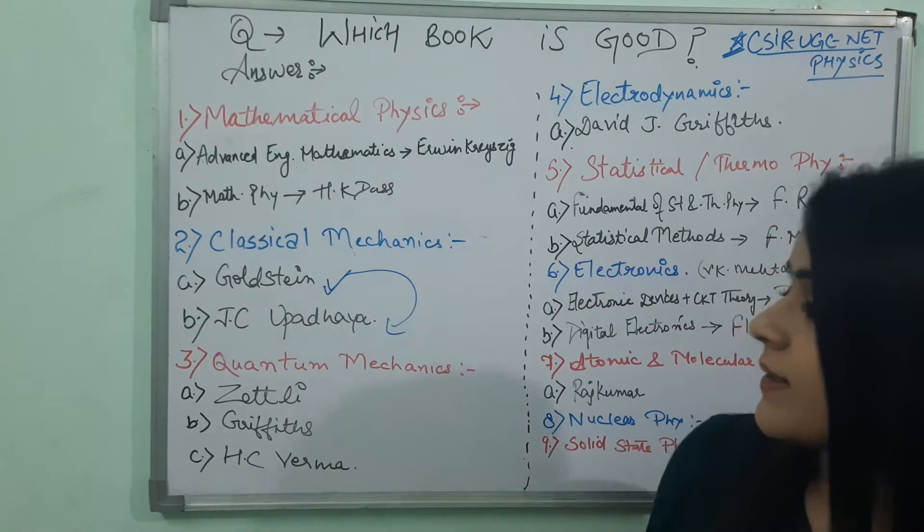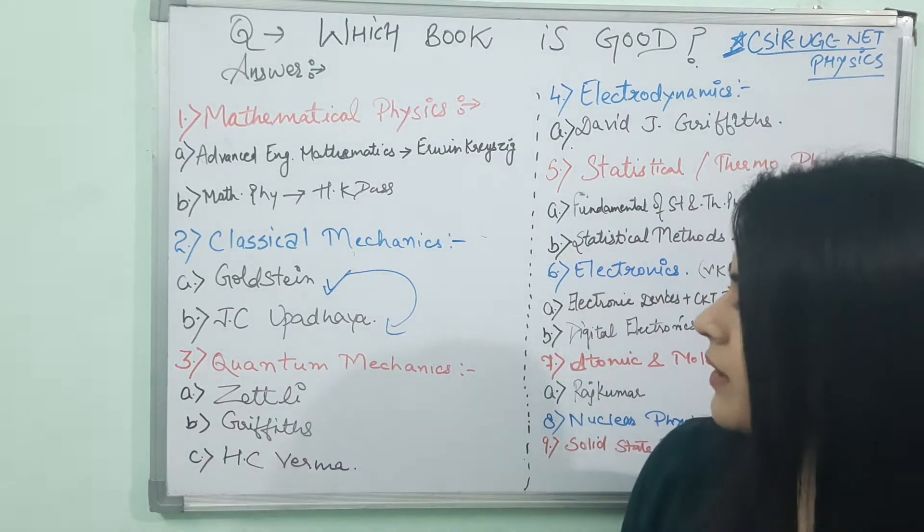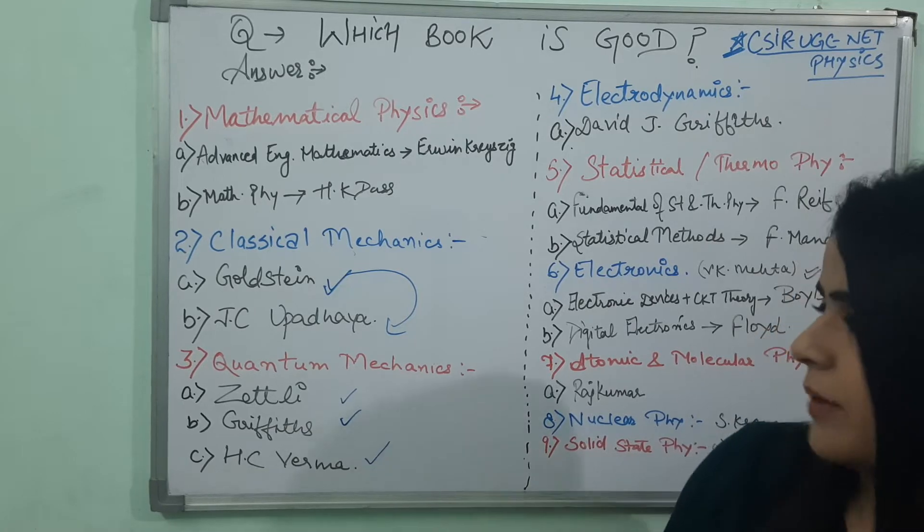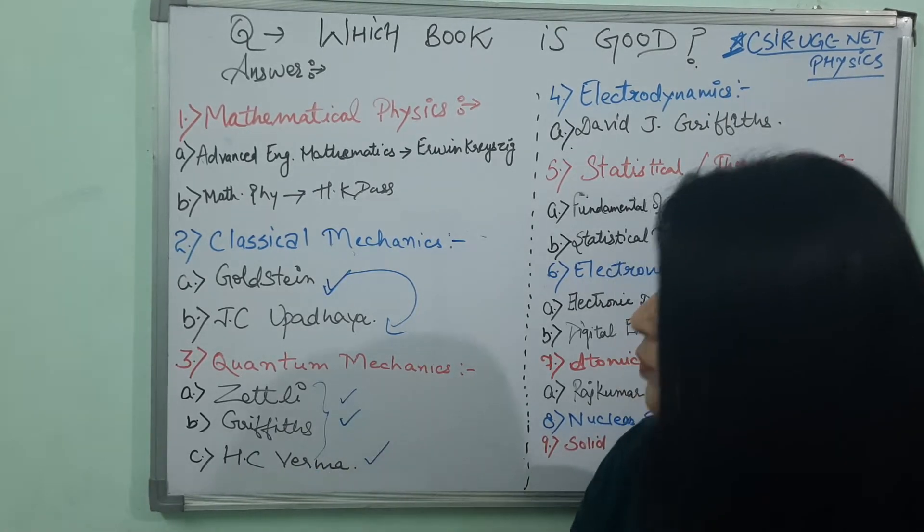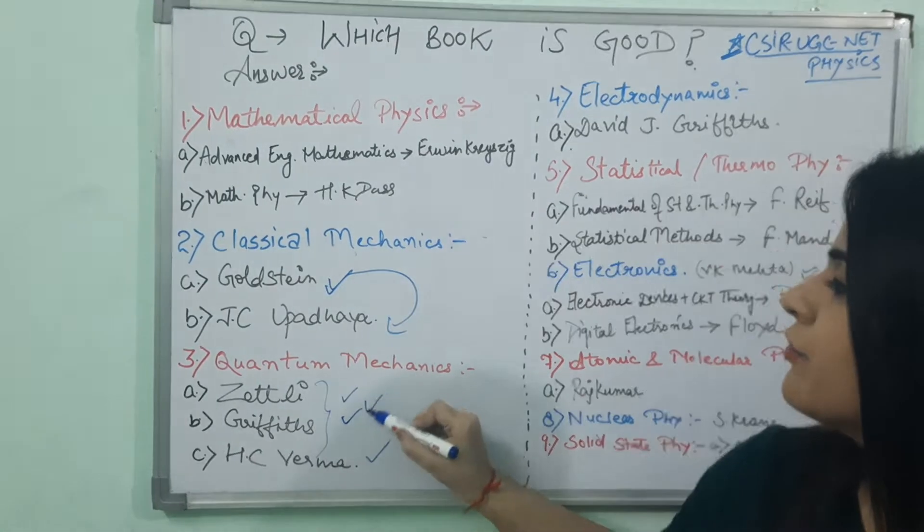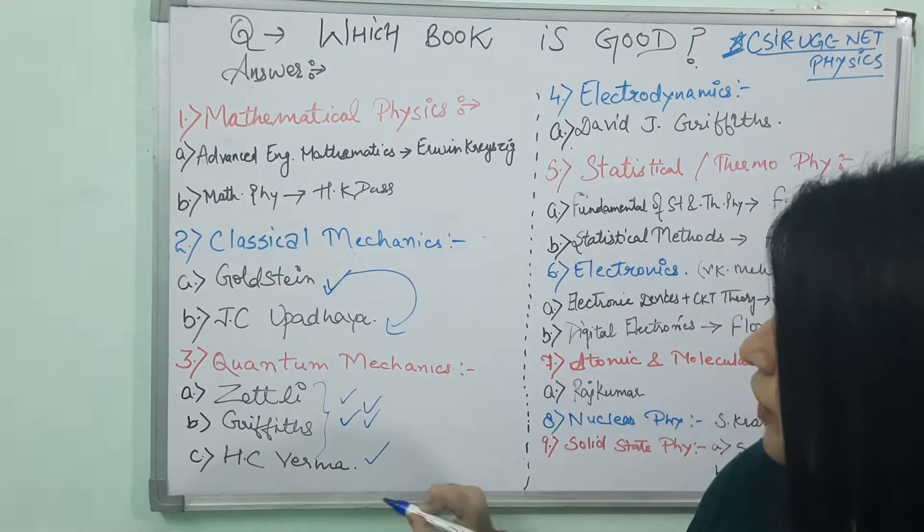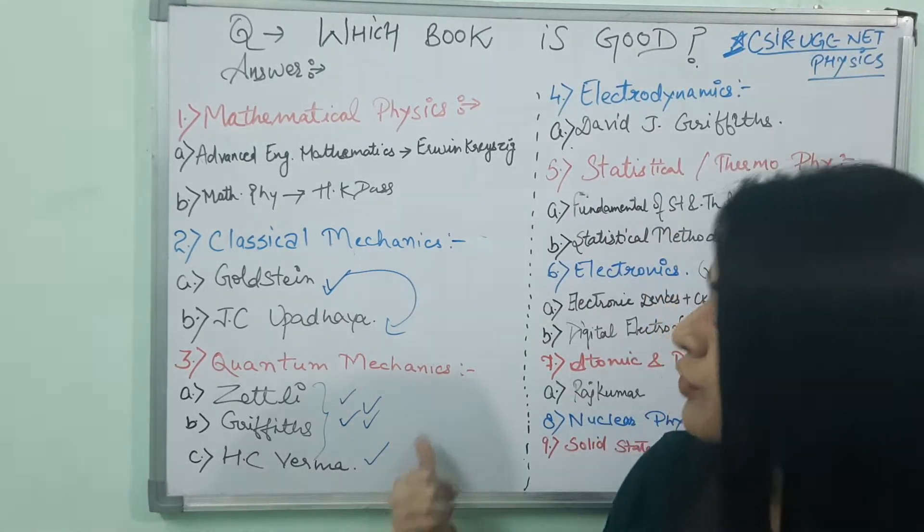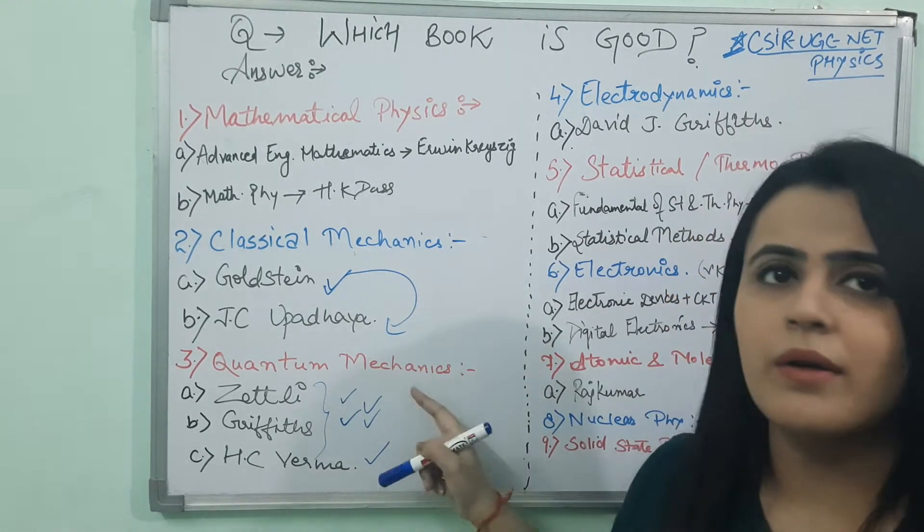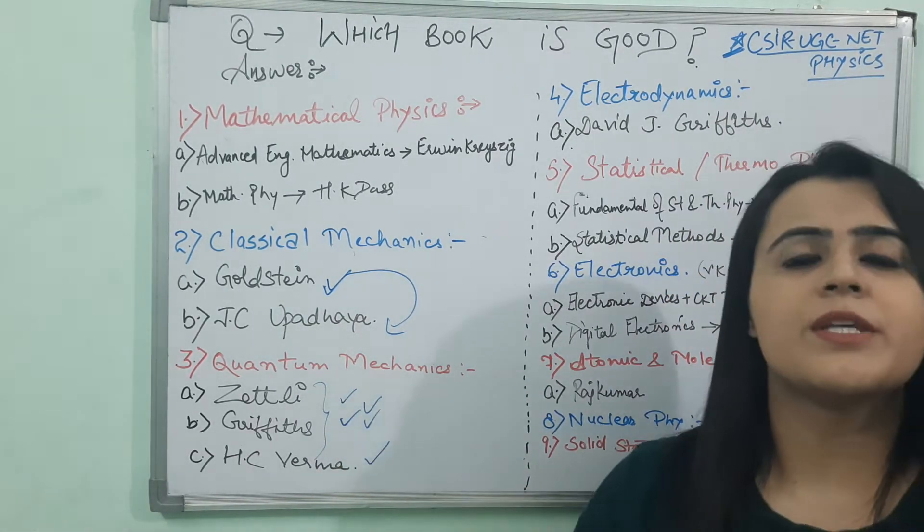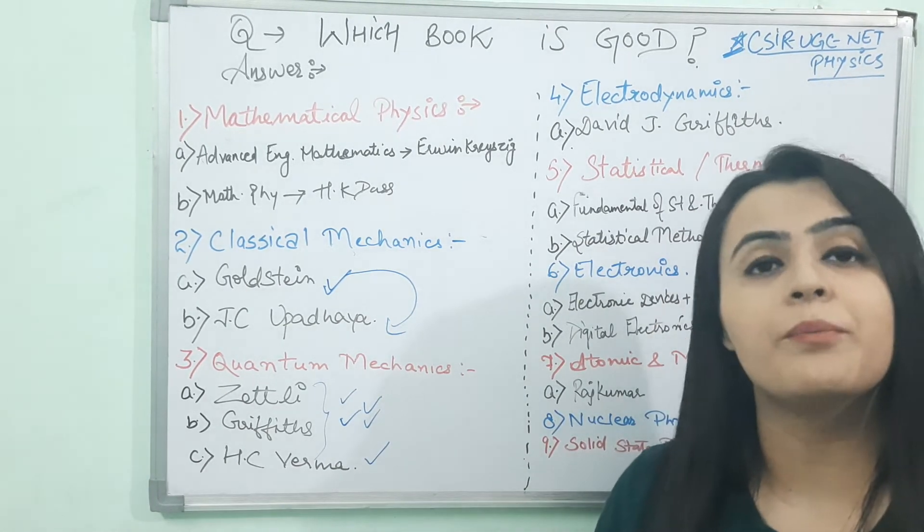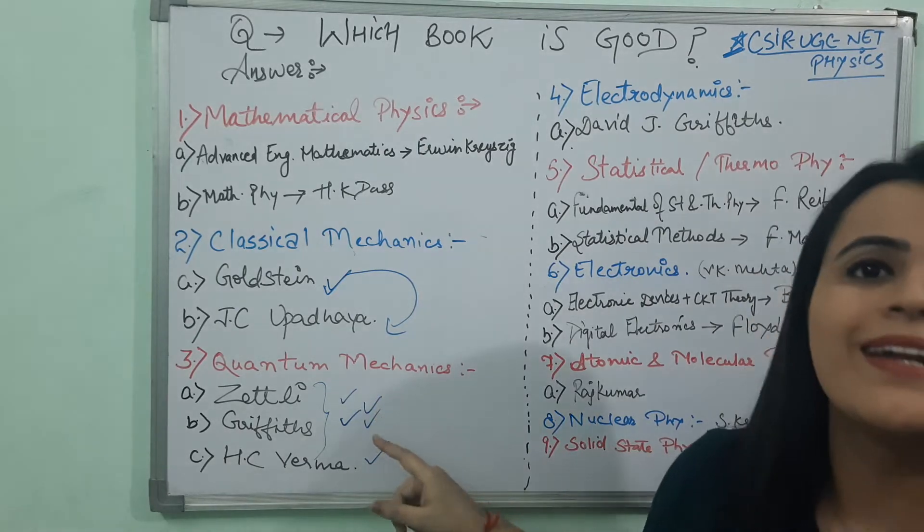And the next one is Quantum Mechanics. For Quantum Mechanics paper, I refer you three books. J.J. Sakurai, Griffiths, H.C. Verma. In these both books, there is a very good quality of examples. And in H.C. Verma is the mixture of examples as well as theory part. So I just refer you these three books. These are very important books for Variational Principles, WKB Approximation Methods, for Born Approximation Methods, for Scattering Principles. I just refer you J.J. Sakurai and Griffiths.